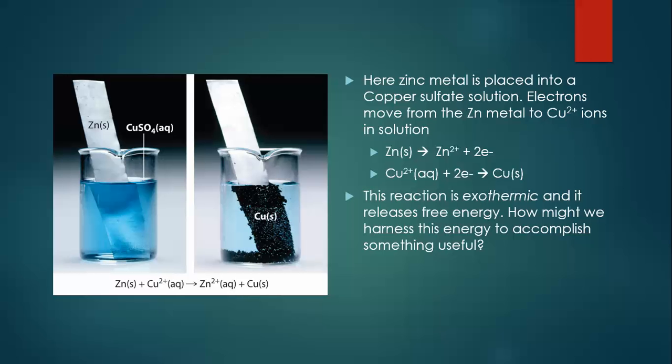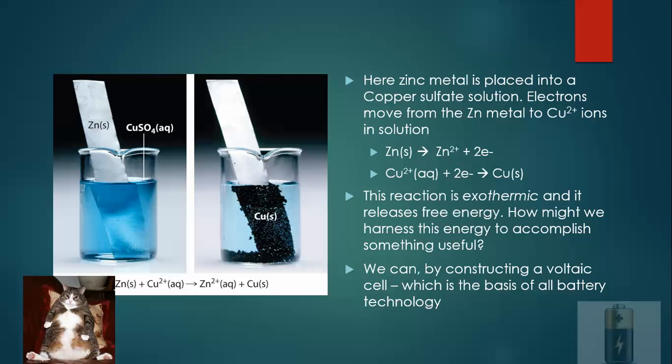This reaction is spontaneous. It's exothermic — it releases energy. So if you remember the delta G stuff, delta G is negative here. There's some energy being released, and if only we could somehow harness that energy, we could maybe do something useful with it. This is what we're talking about today — the ways in which we can actually harness that energy to make what we call a voltaic cell, which is the basis of all battery technology.